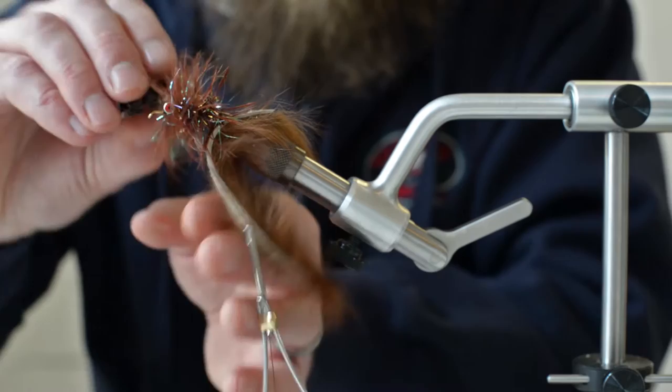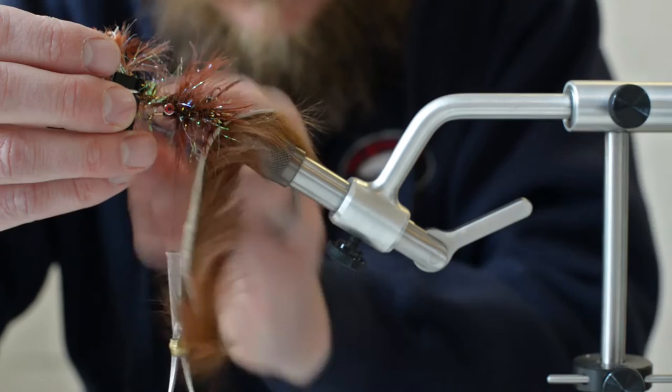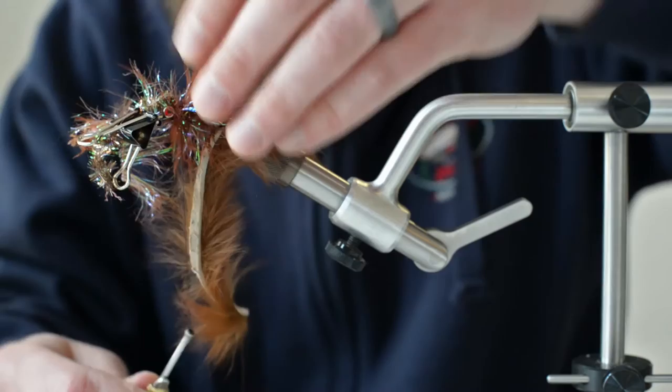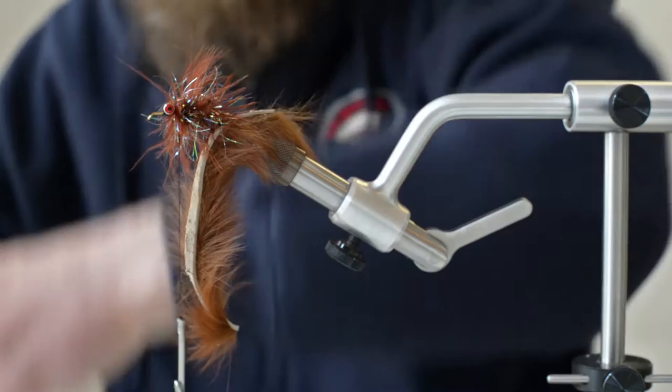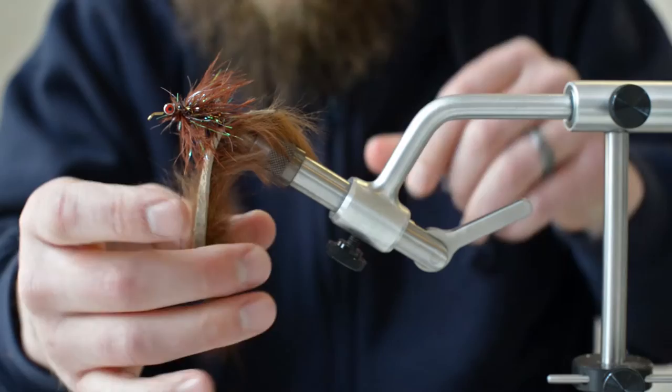That should be fine. If you've got some of those fluffy ones in there, that's okay. Get rid of your dubbing spinner and just start wrapping these guys forward. If we get up to our thread, go ahead and tie it off. Pull a bunch of those feathers back so I don't lose or trap down too many of them. Two wraps should secure it.